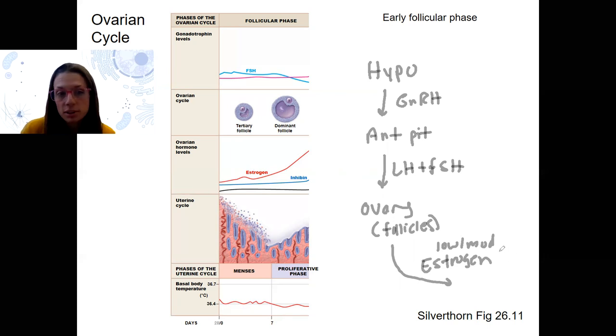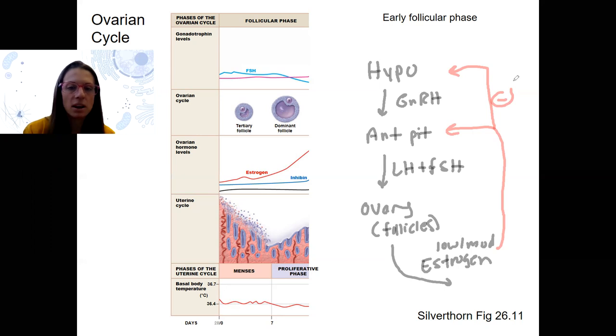Those follicles are producing estrogen. So it's more and more estrogen as they grow more and more. This estrogen is going to feed back to inhibit this system, keep it within normal ranges. Yes, estrogen is increasing over time, and yes, there's those surges of pulses of GnRH coming from the hypothalamus. But this estrogen is designed to still keep the system within normal baseline limits, and it's going to do that at least for a little bit.